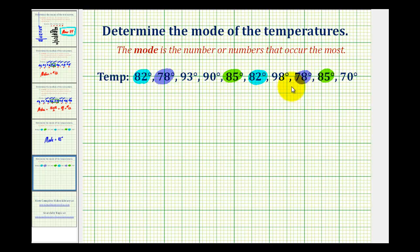But notice the remaining temperatures only occur once. So the most any temperature occurs is twice, but three different temperatures occur twice. Therefore we have three modes.